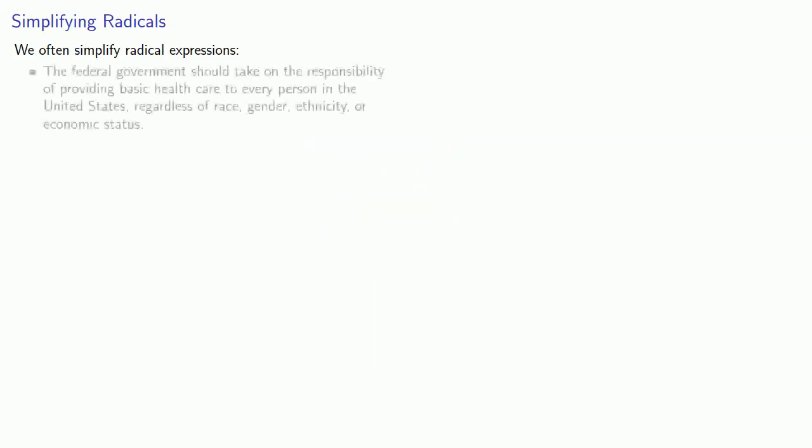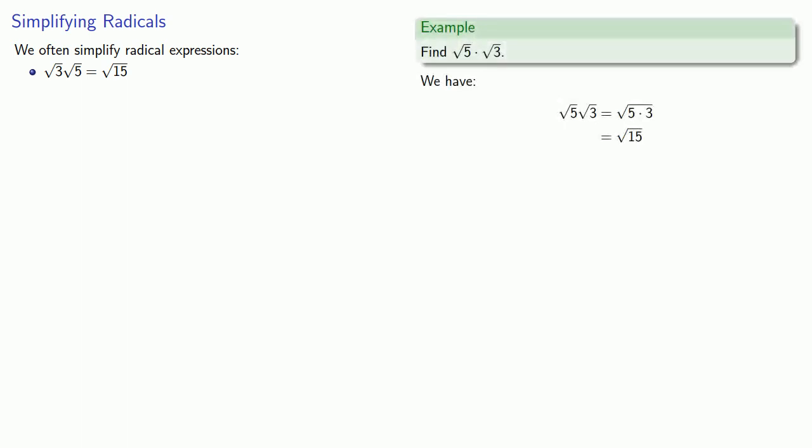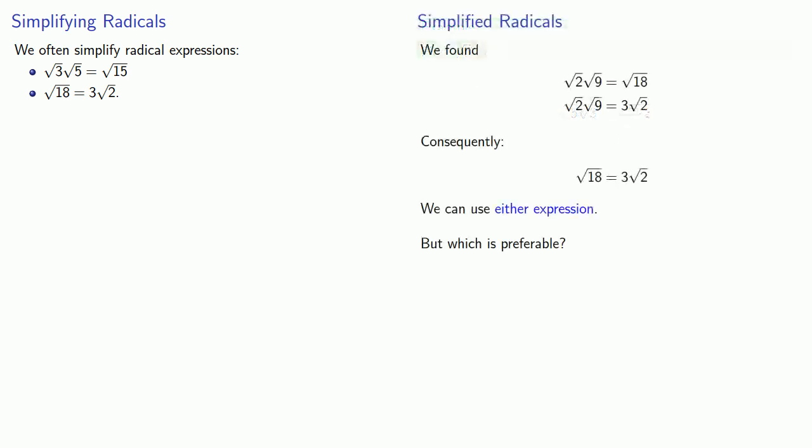We often take a radical expression and simplify it. So square root of 3 times square root of 5 was simplified into a single square root. Square root of 18 was simplified into the square root of a smaller number. And so we can try the simplification process in general.